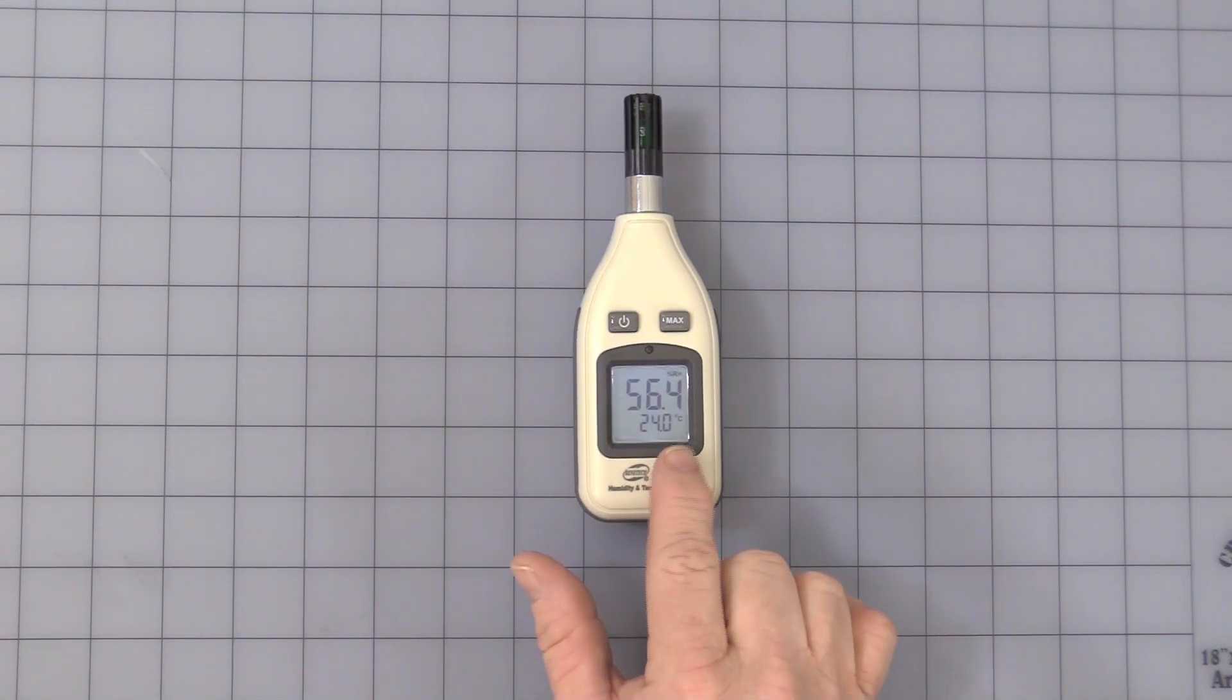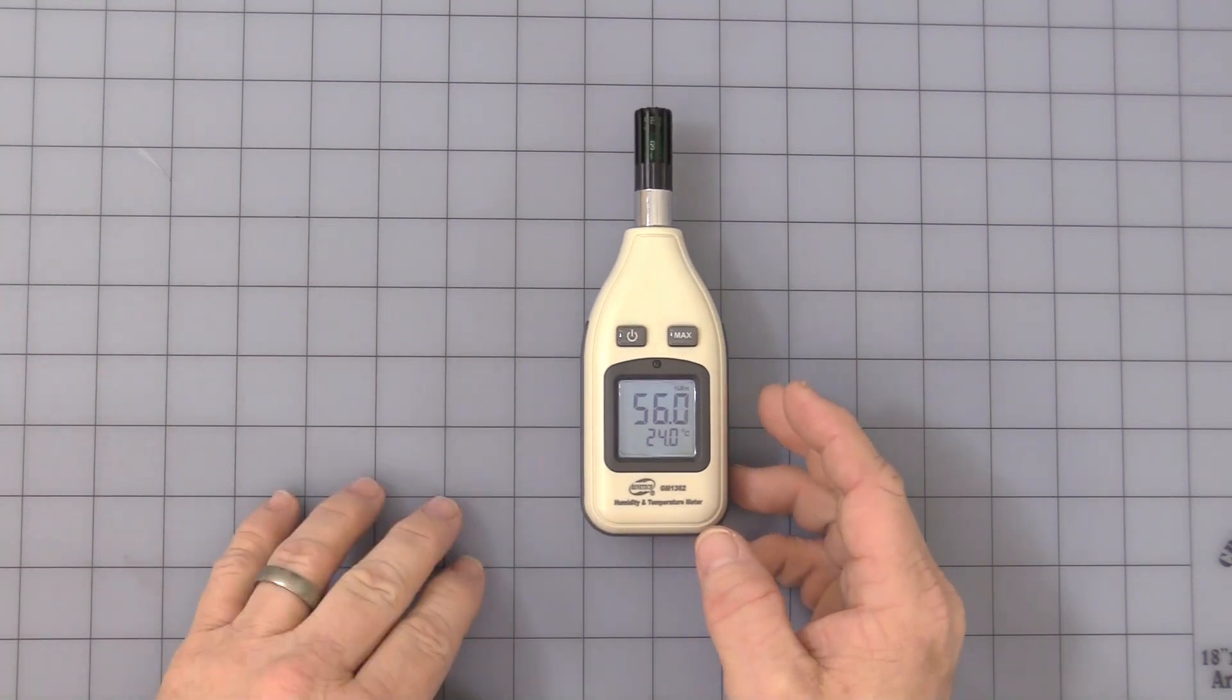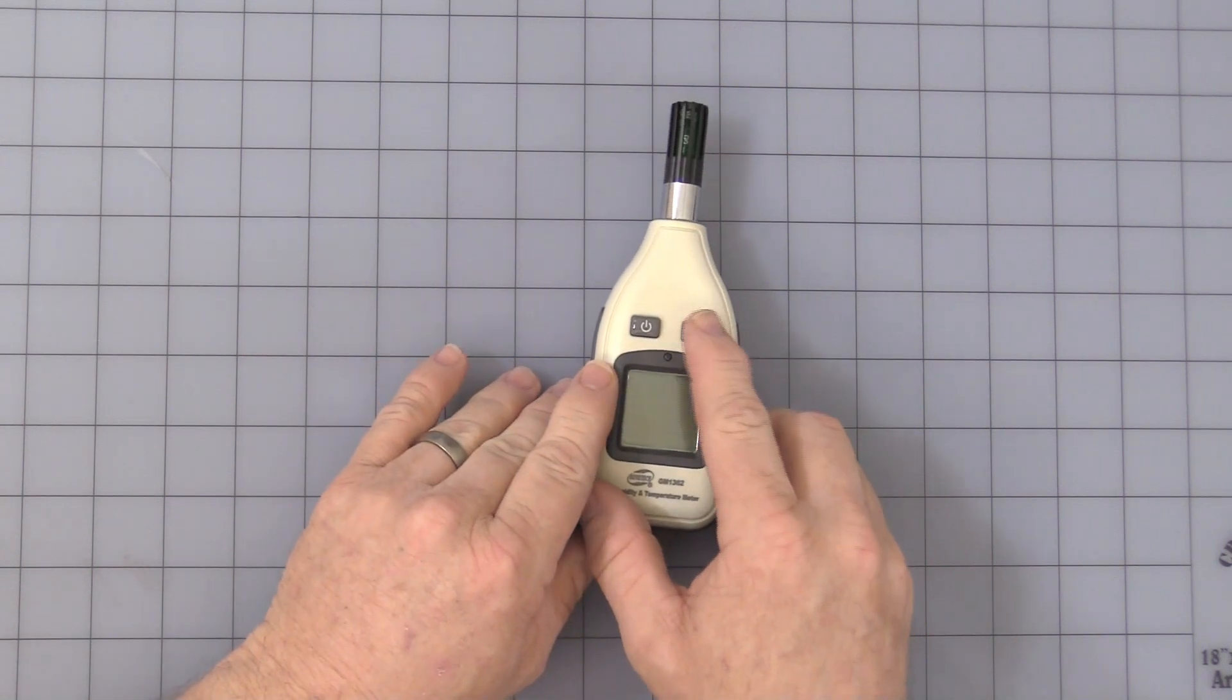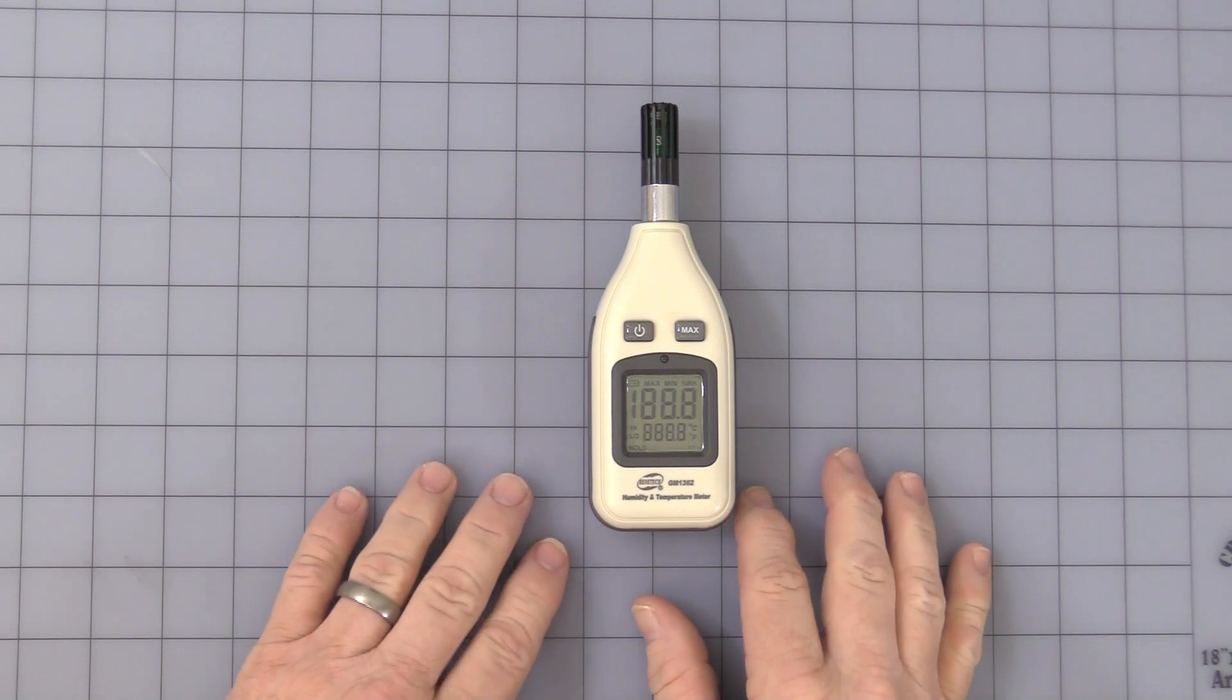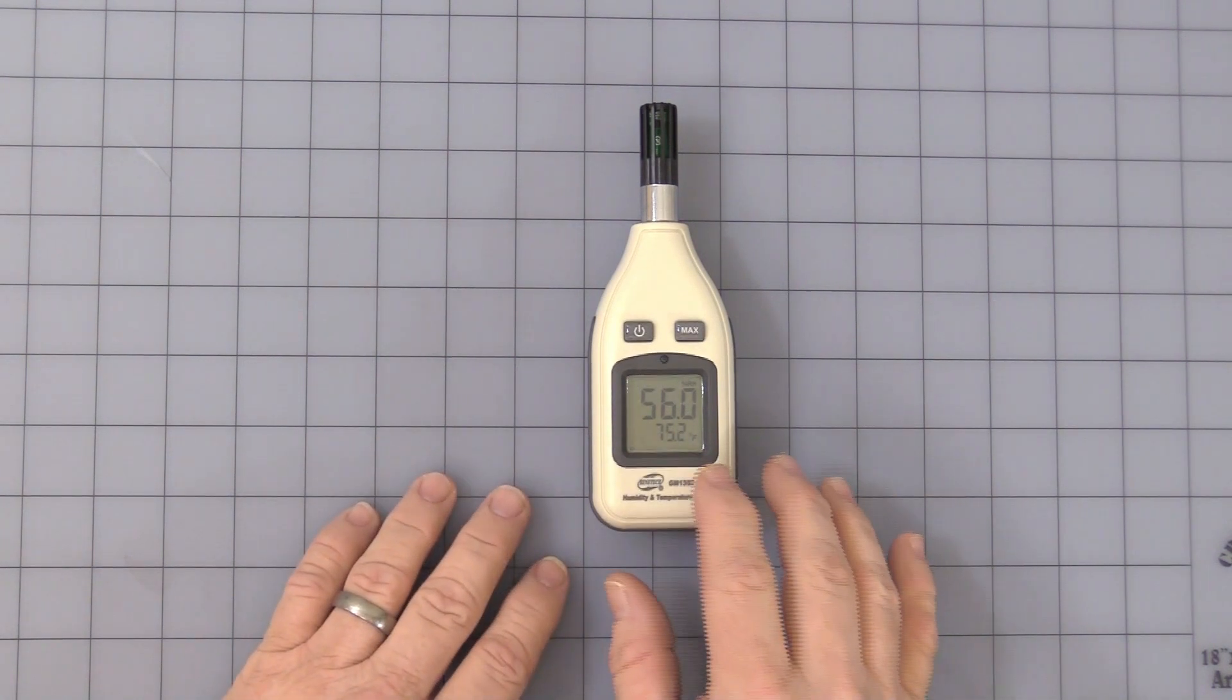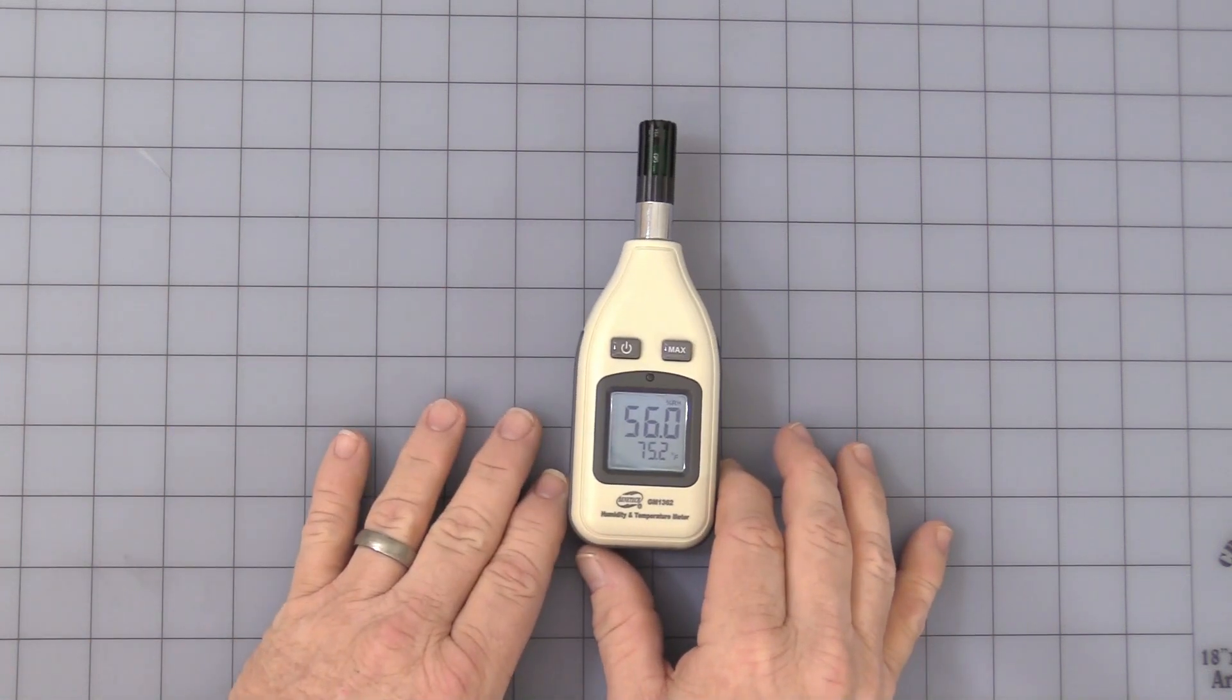It comes from the factory in Celsius. Let me show you how to convert that over to Fahrenheit right off the bat. You'd have to turn the unit off, hold the max button, and then press the on button. And it comes on, and it converts it to Fahrenheit.